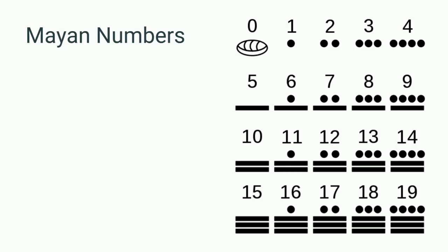which would be denoted by a dot in the next place value, which would be 20, and a shell in the place value for the 1s, where we would represent 0 through 19.